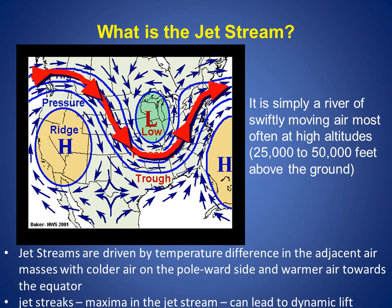The jet stream is a river of swiftly moving air, sometimes exceeding 200 mph, most often at high altitudes of 25,000 to 50,000 feet above the ground. It typically moves north around ridges of high pressure, where you will find dry and generally warmer conditions, and south of the troughs of low pressure, where you will find cool and stormier conditions.